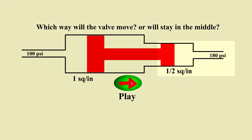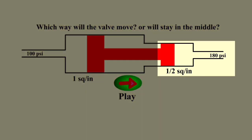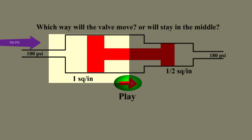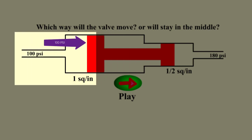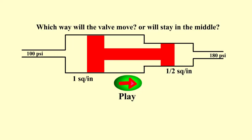On the right hand side of the spool valve there is 180 pounds per square inch being applied to one half square inch area of the spool valve. On the left side there's 100 psi being applied to one square inch. The question is which way will the valve move — to the right, to the left, or just stay in the middle?